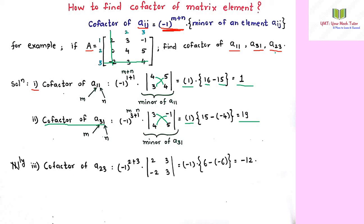Similarly, let us take the last example to find the cofactor of a23. You can try this yourself and check whether you get minus 12. You can comment your answer below the video. The cofactor of a_ij equals minus 1 to the power m plus n into the minor of a_ij. Thank you — please like, share, and subscribe.